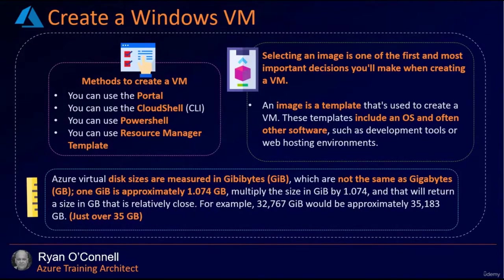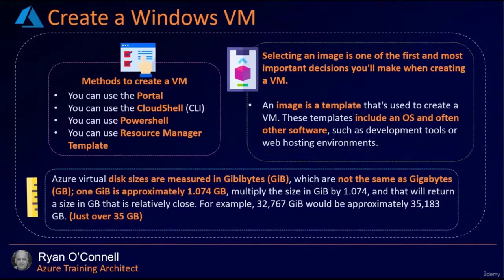Selecting an image is one of the most important decisions when creating a VM. An image is a template used to create the VM, including the OS and often other software such as development tools or web hosting environments. Azure virtual disks are measured in gigabits, not gigabytes. To get the right size, you can multiply 1074 by the desired size to get roughly close to the hard drive size you're looking for.